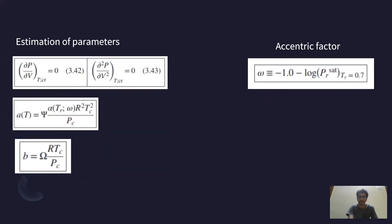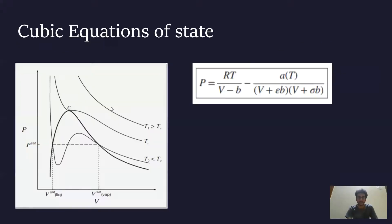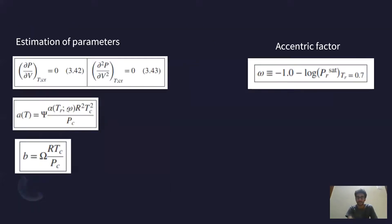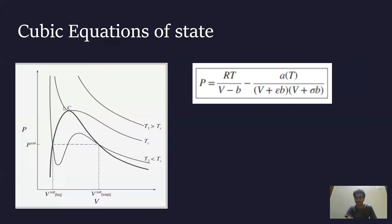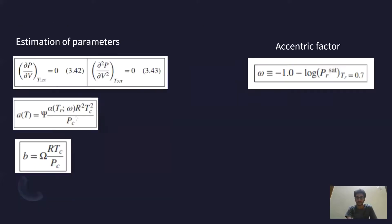In order to estimate the parameters of a cubic equation of state, one method is to use experimental data and fit the coefficients. Another method is to use the mathematical property that at the critical point there is an inflection: at point C the slope becomes zero, meaning both the first derivative and second derivative are zero, because this point is neither a maximum nor a minimum — it is an inflection point.